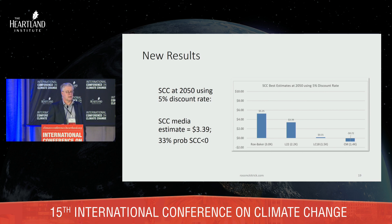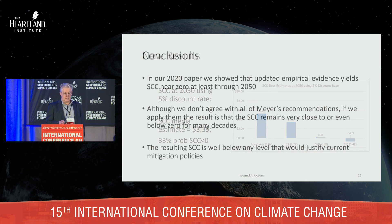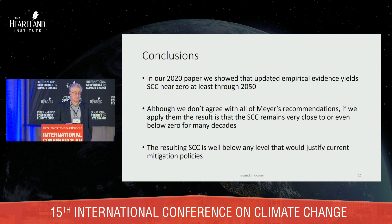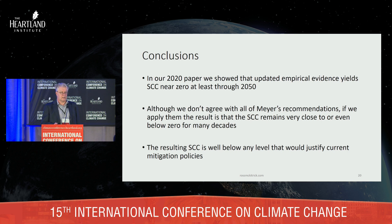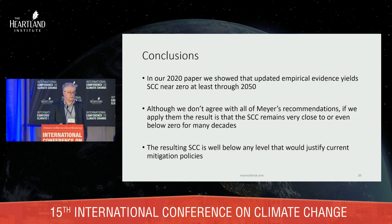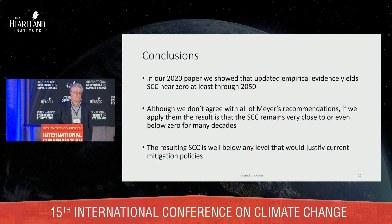In our 2020 paper we showed that updated empirical evidence yields a social cost of carbon near zero through 2050. We don't agree with all of Meyer's recommendations, but taking them at face value, the social cost of carbon remains very close to zero or below zero for many decades — well below any level that would justify current mitigation policies. The point isn't that we agree with those models or parameter choices; it's that if you improve the data in the EPA's own models, their own models say the policies can't be justified.